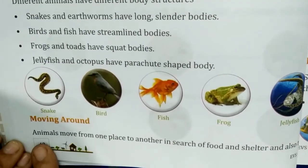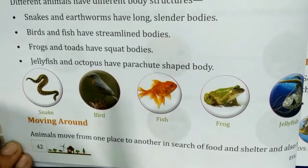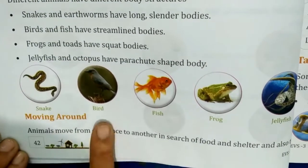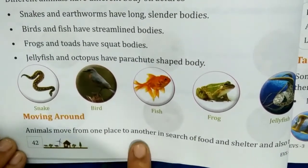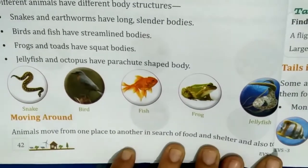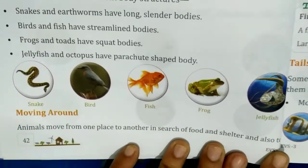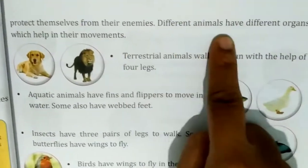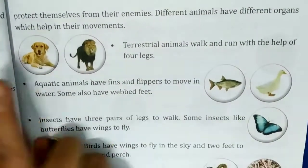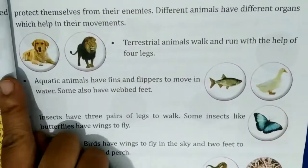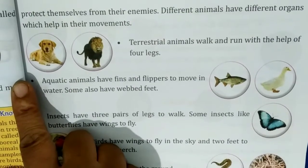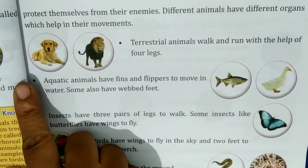Moving around. Animals move from one place to another in search of food and shelter, and also to protect themselves from their enemies. Different animals have different organs that help in their movement.